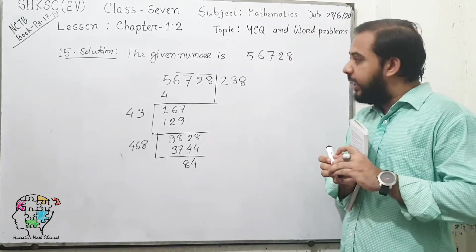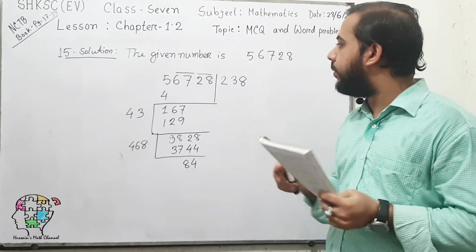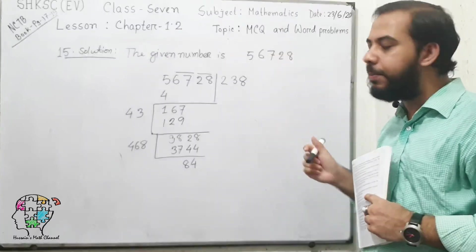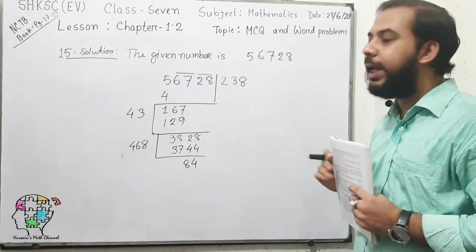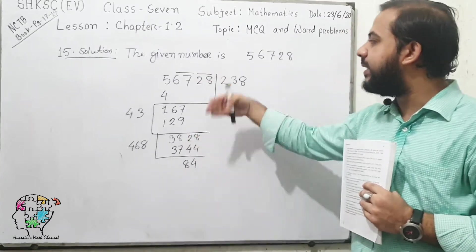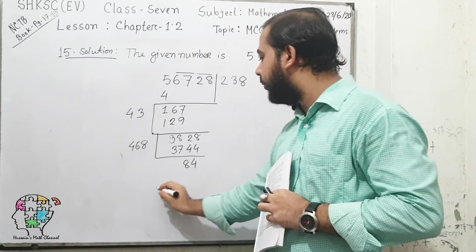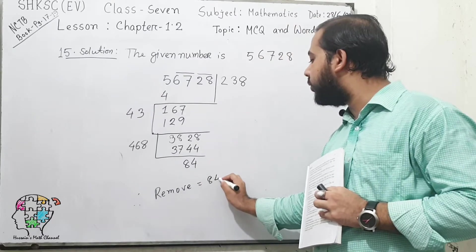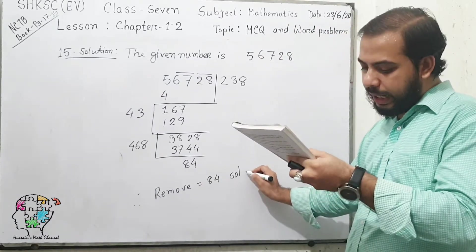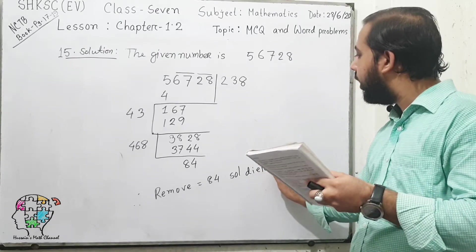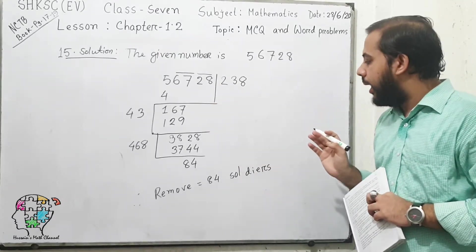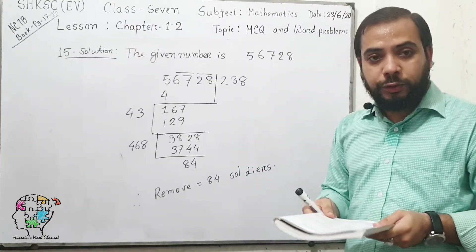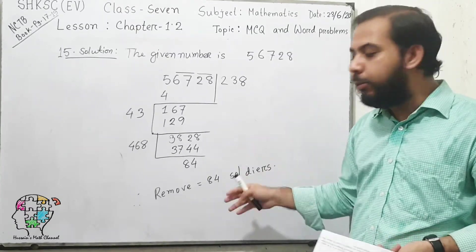The given number of soldiers can be formed in a square where the number of rows and columns are the same. If 238 is the perfect square root but 84 exceeds, then if we remove 84 soldiers it will be perfectly square. So if the question asks how many to remove, the answer is 84.